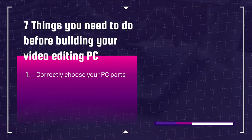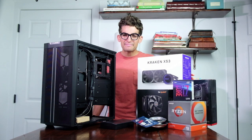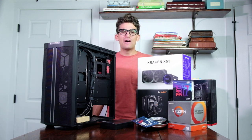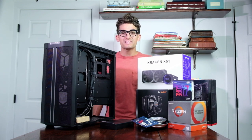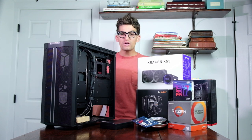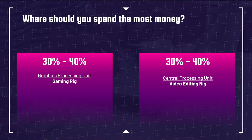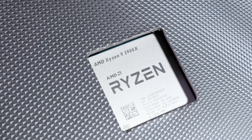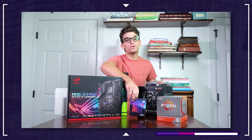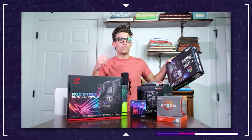The first thing you want to make sure you do is correctly choose your PC parts. When it comes to building a PC, there is a lot of different information online, and most of it is correct — however, it may not be correct for you. Depending on the use case of your computer, you will need to make unique choices. Spending 30-40% of your budget on a GPU is very common for a gaming PC, but it would essentially be a poor use of your budget for a video editing PC. You'd be better off getting a high-end CPU and a mid-tier GPU. I have a full video covering every part you need to correctly choose — check it out in the YouTube cards above or the description below.